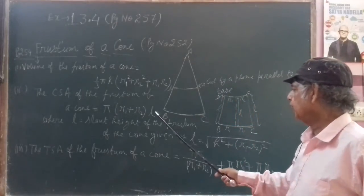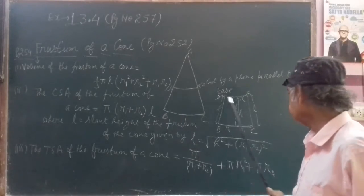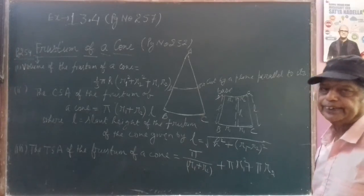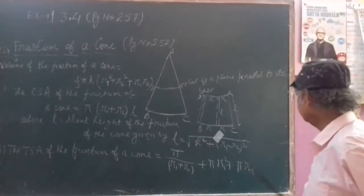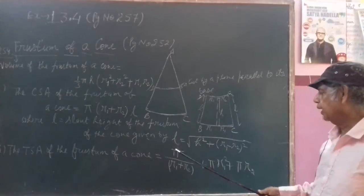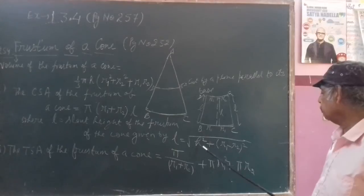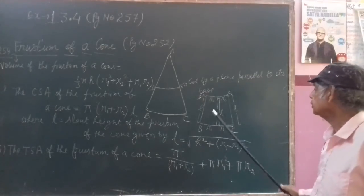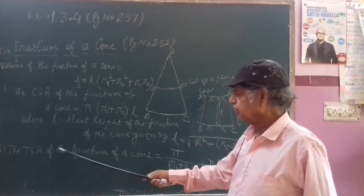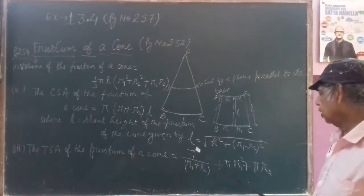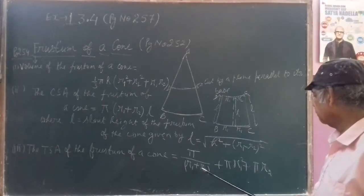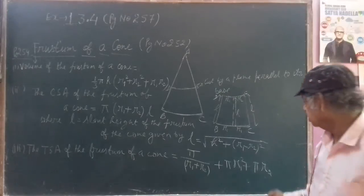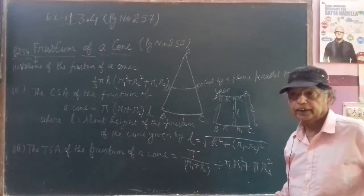Sometimes R1, R2, and H are given but L is not given. In that case you can find L by the formula: L equals square root of (H squared plus (R1 minus R2) whole squared). For the total surface area (TSA) of the frustum of a cone, the formula — which you must learn by heart — is: pi(R1 plus R2)L plus pi R1 squared plus pi R2 squared.